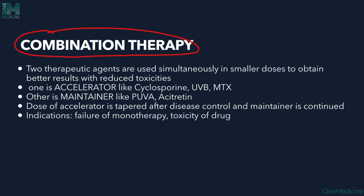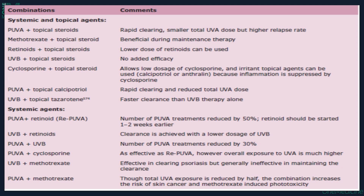In combination therapy, we have three types: combination, sequential, and rotational therapy. In combination therapy, two therapeutic agents are used simultaneously in smaller doses to obtain better results and reduce toxicity. One acts as an accelerator and another as a maintainer. The accelerator includes cyclosporine, UVB phototherapy, or methotrexate; the maintainer includes PUVA therapy or acitretin. The accelerator dose is tapered once disease is controlled and the maintainer is continued.